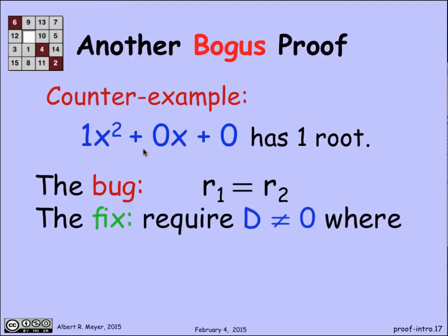The fix to that is to require the quantity by which the two root formulas, R1 and R2, differ to be non-zero. And that's the quantity that you were taking the square root of. The discriminant is called. B squared minus 4ac needs to be non-zero. And then R1 and R2 will differ, and we will get the two roots.